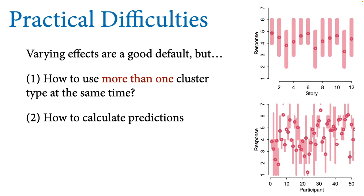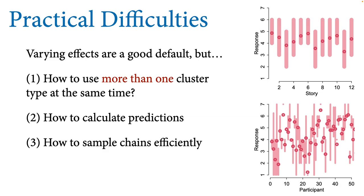Calculating predictions with varying effects gets trickier because now you have to talk about at what level you're making predictions. Are you making predictions for whole new clusters, or are you making predictions for new elements inside of previously experienced clusters? Those are really different kinds of predictions. Imagine making a prediction for a new tadpole in an existing tank versus predictions for new unobserved tanks that tadpoles might appear in — we need to use different parameters from the models for those different kinds of predictions. And there's also the issue of drawing the owl: how do we get the chains to sample efficiently?